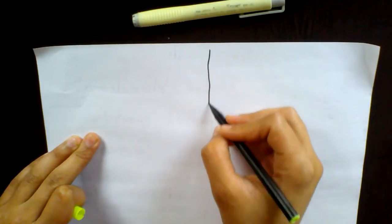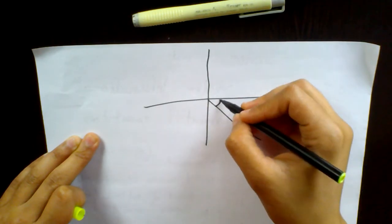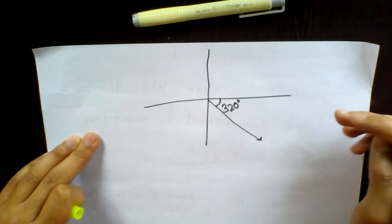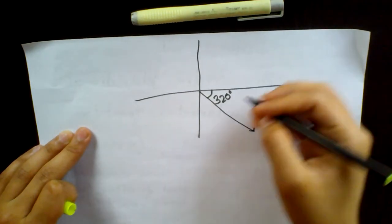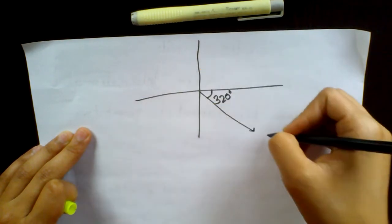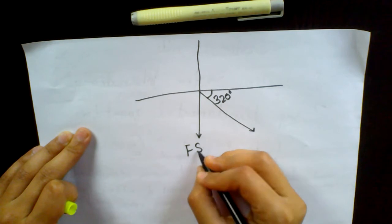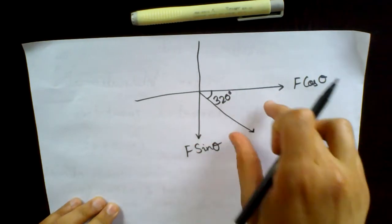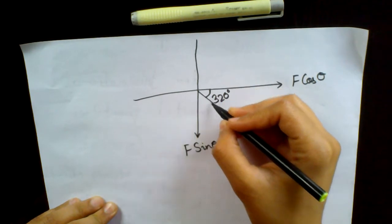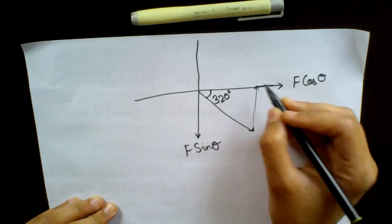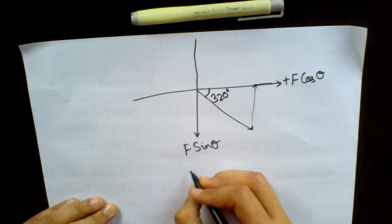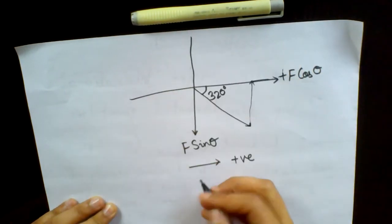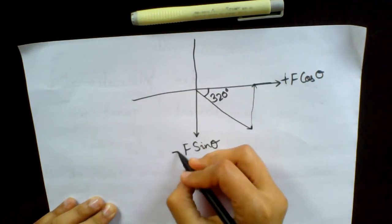Imagine you have a force system in which you have the angle as 320 degrees, and the force is moving in this direction. In this case also, the force is resolved into two components — one component will be F sin theta, and this one will be F cos theta. Because the force here is moving to the right direction, when you join these two components it comes this way and then moves this way, so it becomes positive x — right direction, positive x-axis — plus F cos theta. Downward direction makes the y-axis negative, so minus F sin theta.